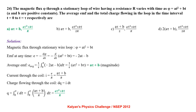The magnetic flux through a stationary loop of resistance R varies as φ = At² + Bt, where A and B are positive constants. EMF at any time e = −dφ/dt = −2At − B. Average EMF = (1/τ)∫₀^τ (−2At − B)dt, which comes out to (Aτ + B) in magnitude. Charge flowing: Q = ∫₀^τ I dt = (Aτ² + Bτ)/R.